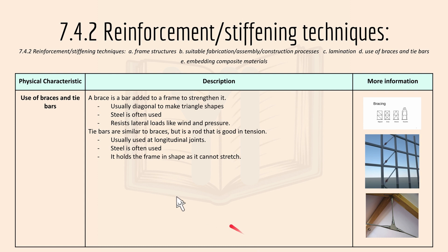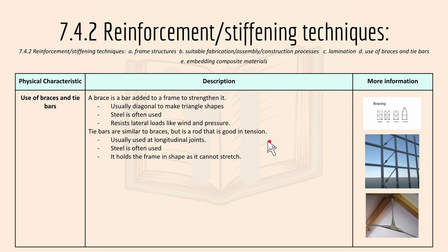Braces and tie bars are used to strengthen frames. A brace is a bar added to a frame to strengthen it — usually diagonal to make triangle shapes, since triangles are among the strongest shapes. Steel is often used and it resists lateral loads like wind and pressure. Tie bars are similar to braces but are rods that are good in tension. They are usually used at longitudinal joints, hold the frame in shape, and cannot stretch.